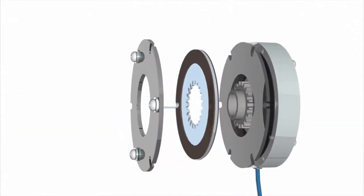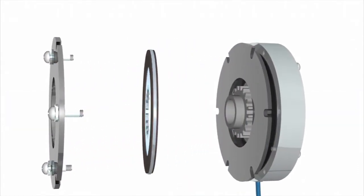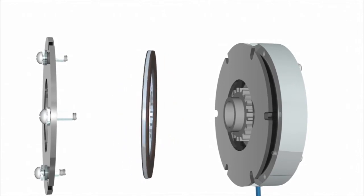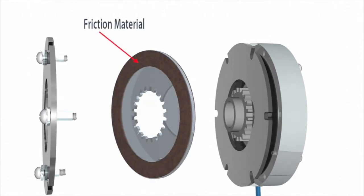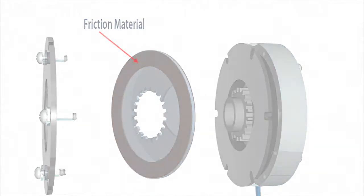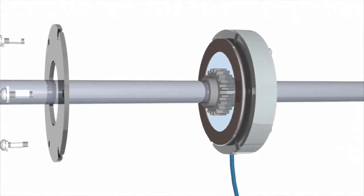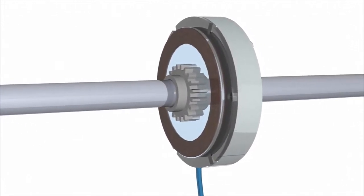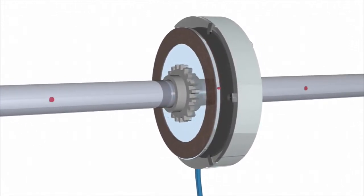Depending on the brake and its function, different types of friction material can be used. In most applications, the friction material is free to move over a square or spline on a hub that is fixed to the shaft. There is a slight clearance or backlash between the hub and the friction disc.